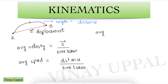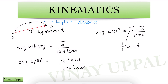Average acceleration — again a vector — is defined as the change in velocity vector. So V vector is the final velocity vector, U vector is the initial velocity vector, divided by the time taken. In physics, remember change always means final minus initial.